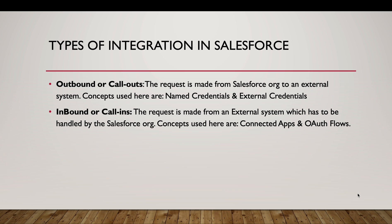Firstly, we need to understand the basics. In Salesforce we have two types of integrations: outbound or inbound. Outbound is called callouts and the inbound integration is called callins. Callouts are requests made from a Salesforce org to an external system. When the request flows from Salesforce to an external system, it is known as an outbound request or callout.